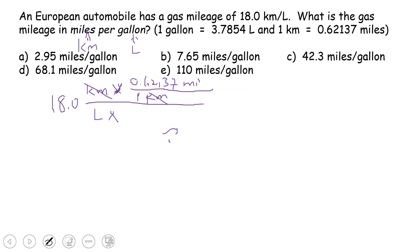On the bottom, we want to convert from liters. We are going to use this relationship, 3.7854 liters to one gallon. And now you can see liters, liters, they are gone.